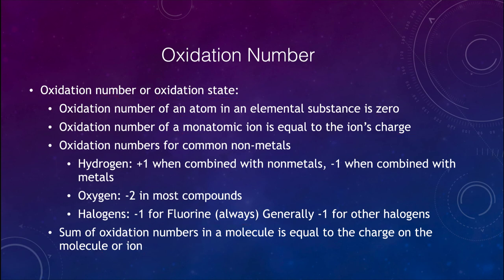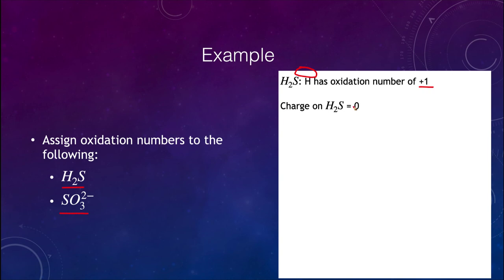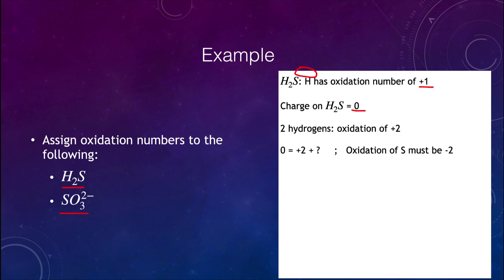Let's calculate oxidation numbers. For H2S: hydrogen has an oxidation of +1, and there are two hydrogens, giving +2 total. The molecule has no charge (charge = 0). So: 0 = +2 + oxidation of sulfur. The oxidation of sulfur must be -2.